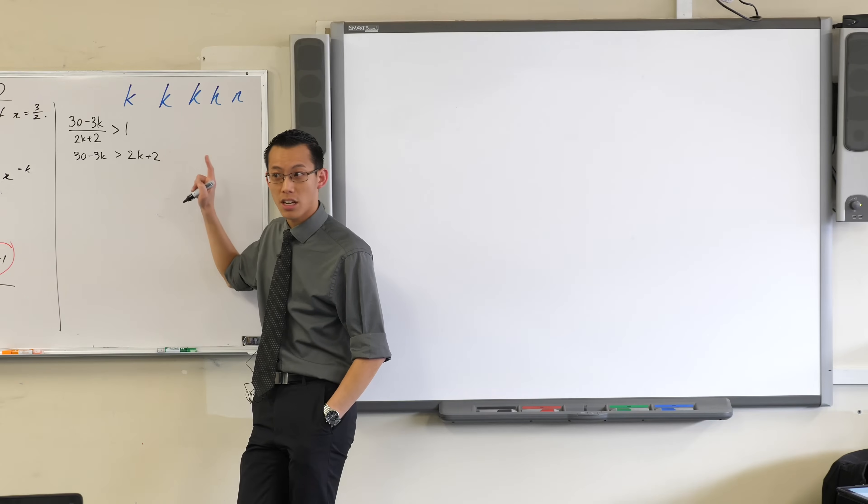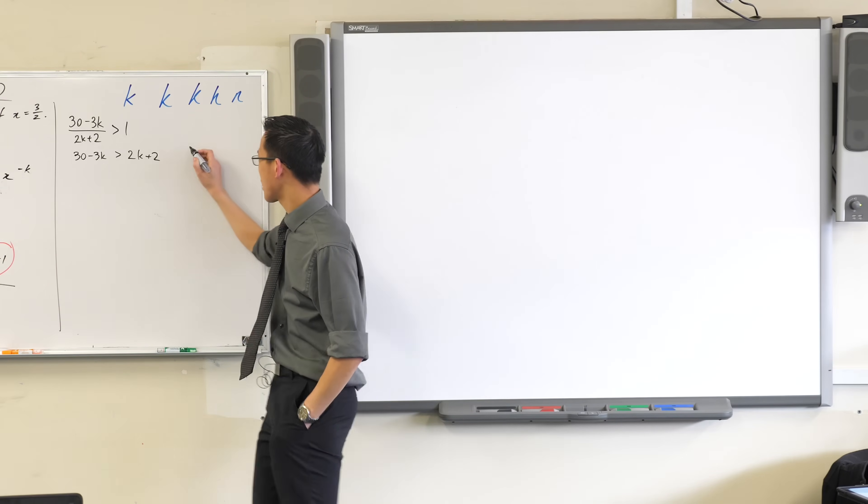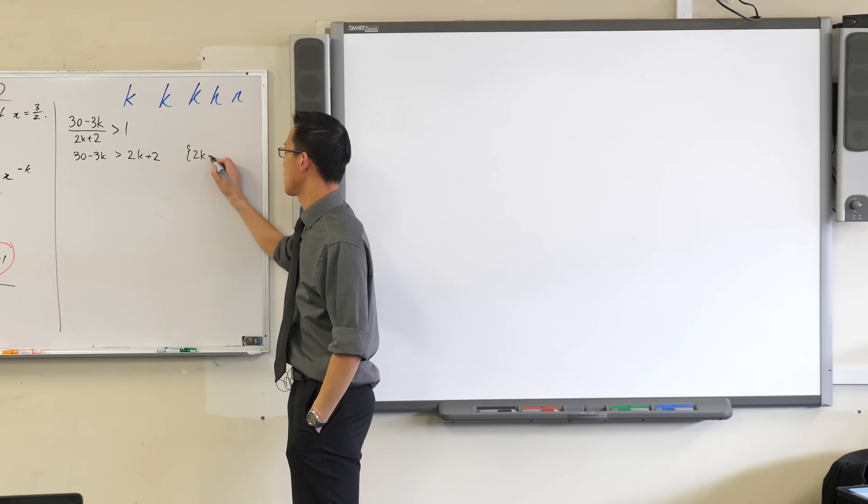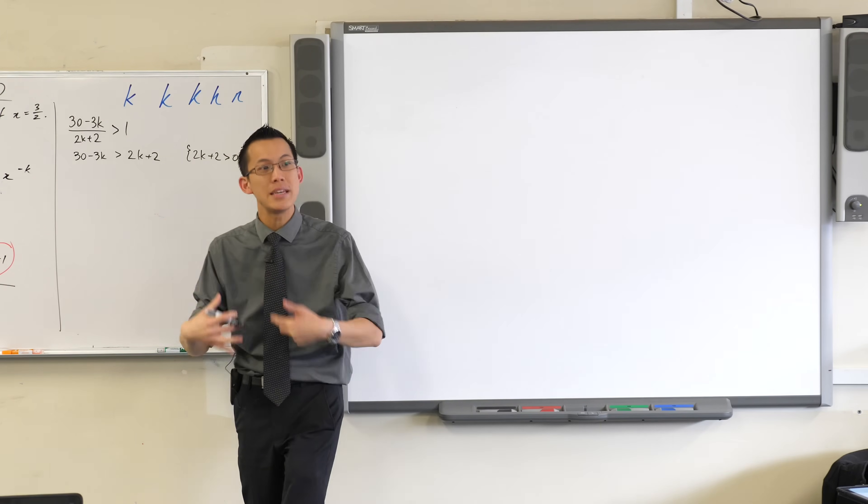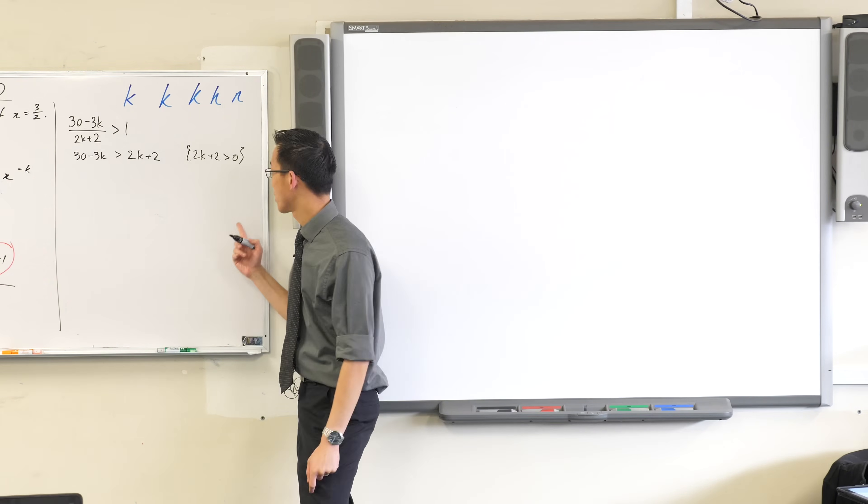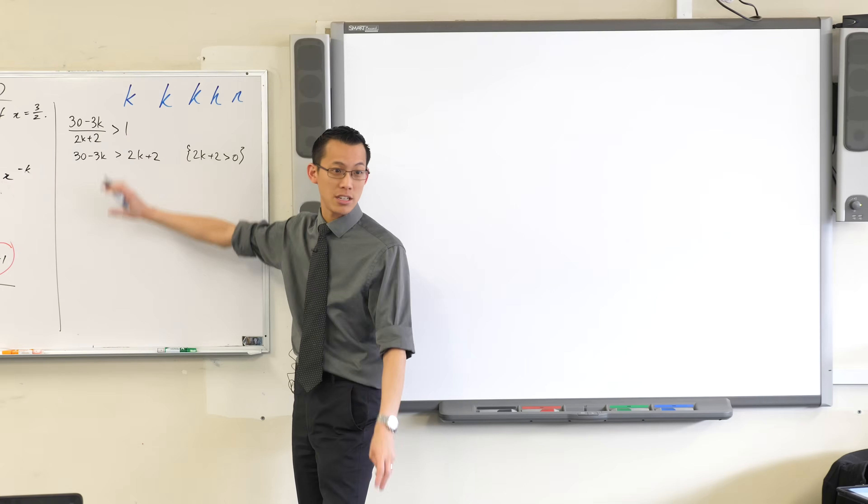Why don't I have to change the direction of my inequality at this point? Because 2k plus 2 is going to be bigger than zero. And I mean, you're not going to lose any marks for not saying this, but I encourage you to say it because it shows that you're being careful, it helps you be careful with your inequalities. So this is positive, don't need to change the direction.